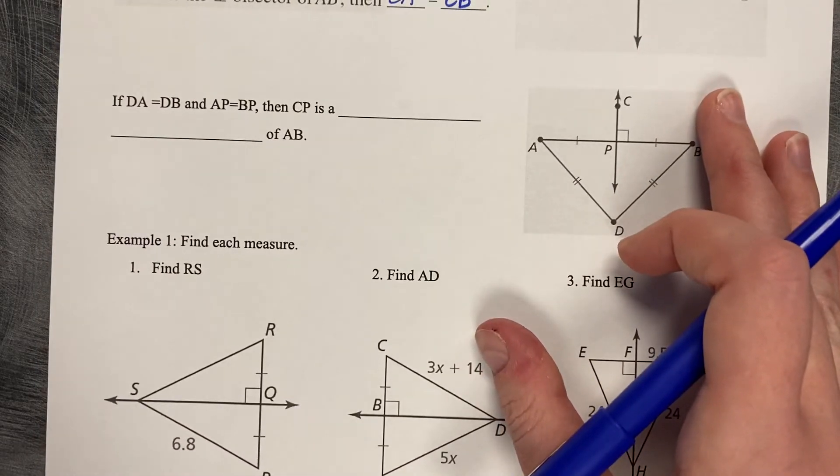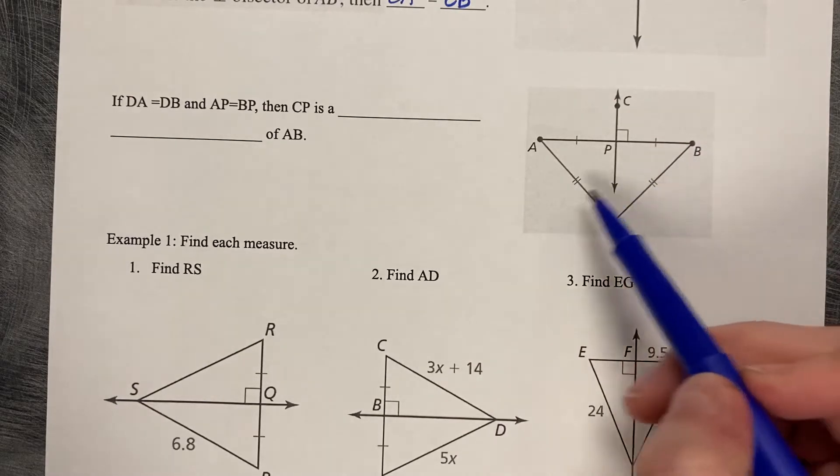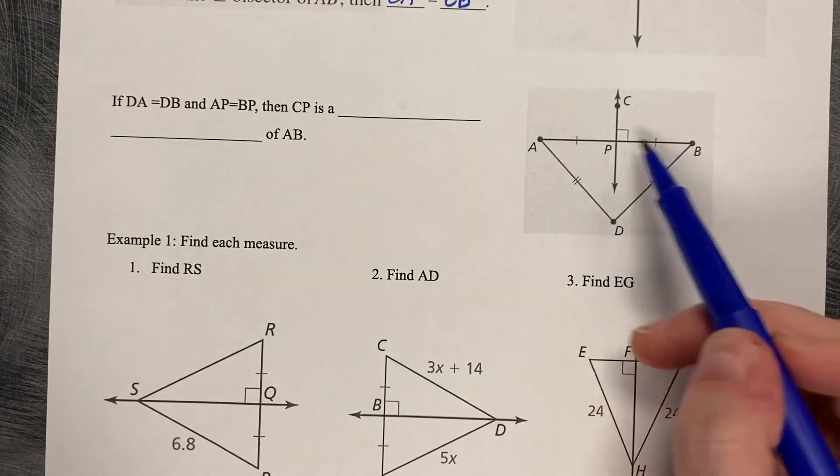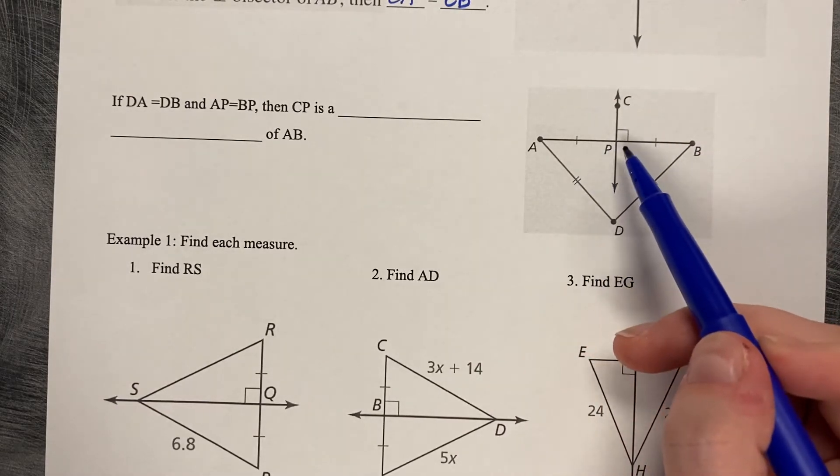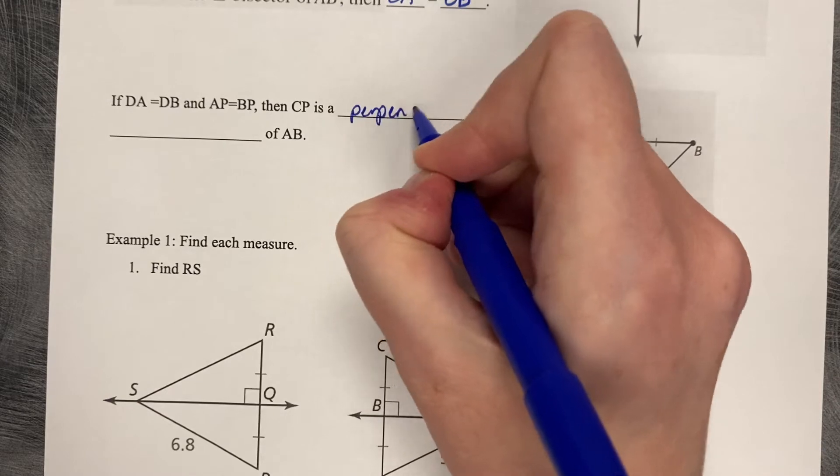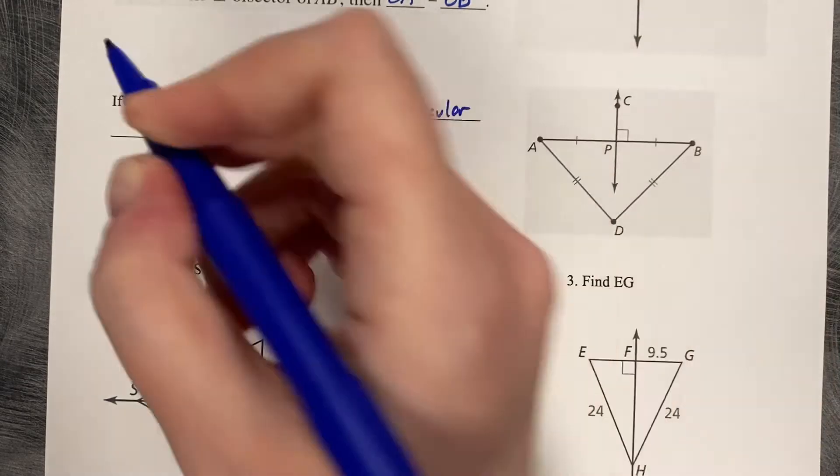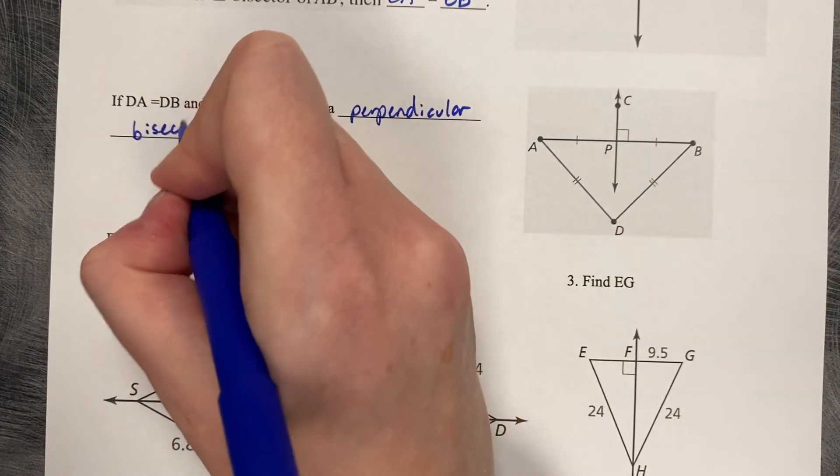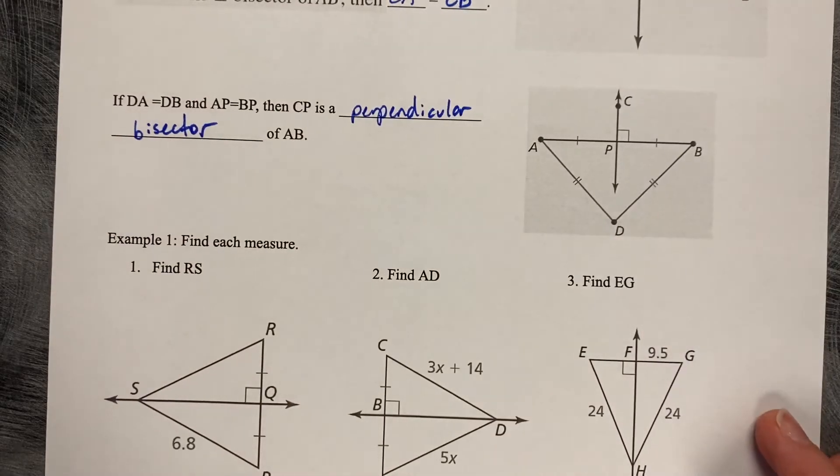You can go the other direction as well. So if you know that these two lengths are congruent, these two lengths are congruent, and it's a perpendicular, you know that it's a perpendicular bisector. It just means you can go either direction.